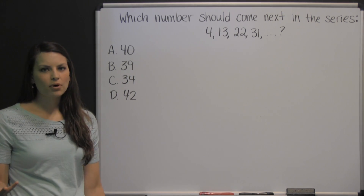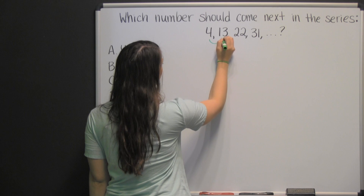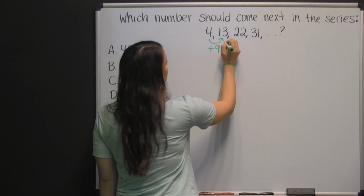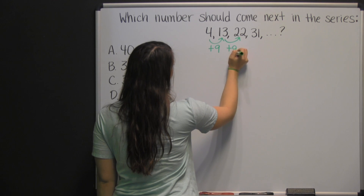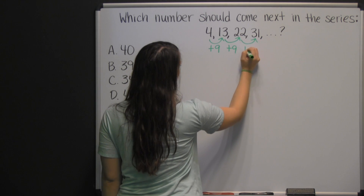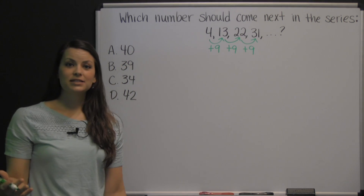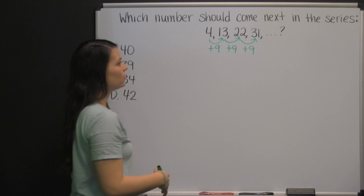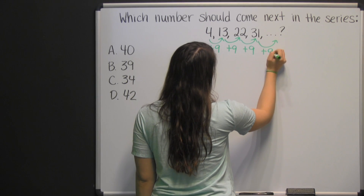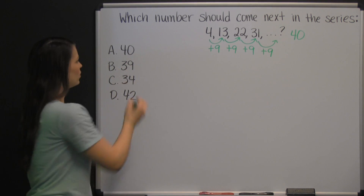I always like to start with something simple, like adding. To get from four to thirteen, you would simply add nine. From thirteen to twenty-two, again you would add nine. Thirteen plus nine is twenty-two. And again, twenty-two plus nine is thirty-one. So the pattern is that we're adding nine to the previous number. Continuing the pattern, thirty-one plus nine would be forty. So the number that comes next in the series is forty.